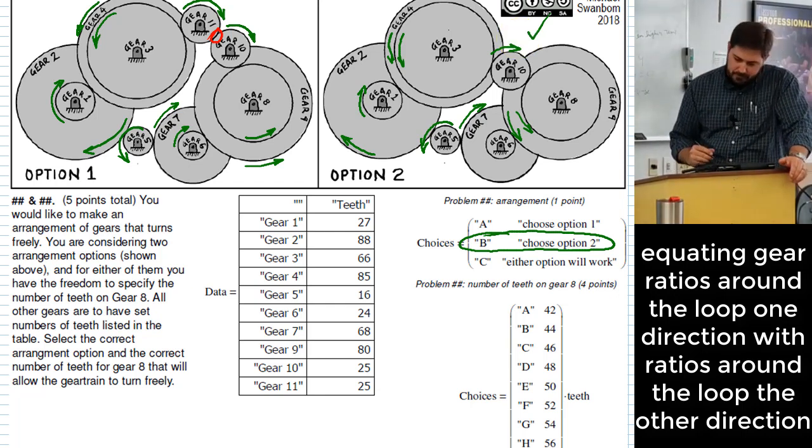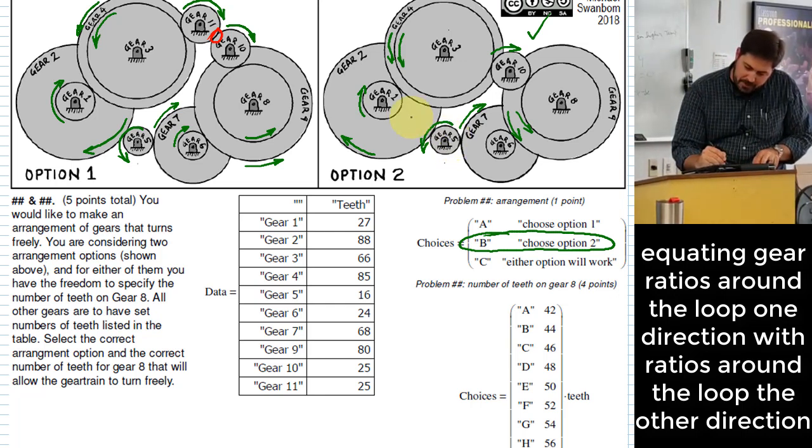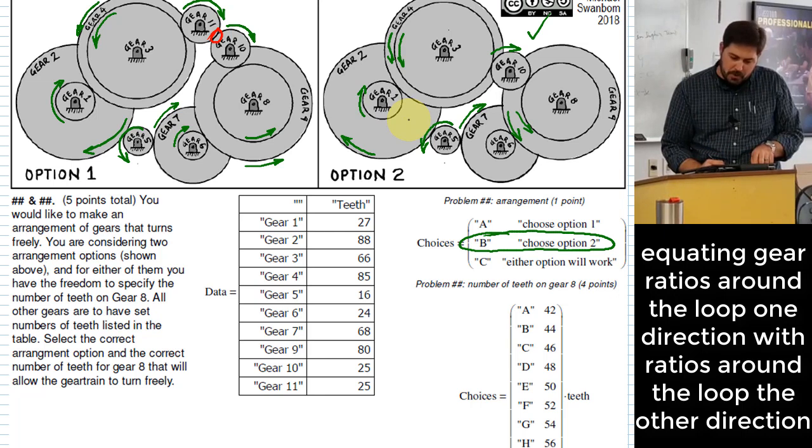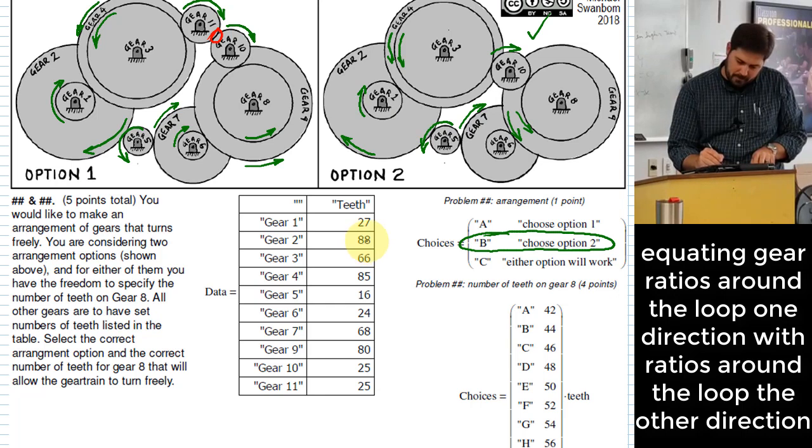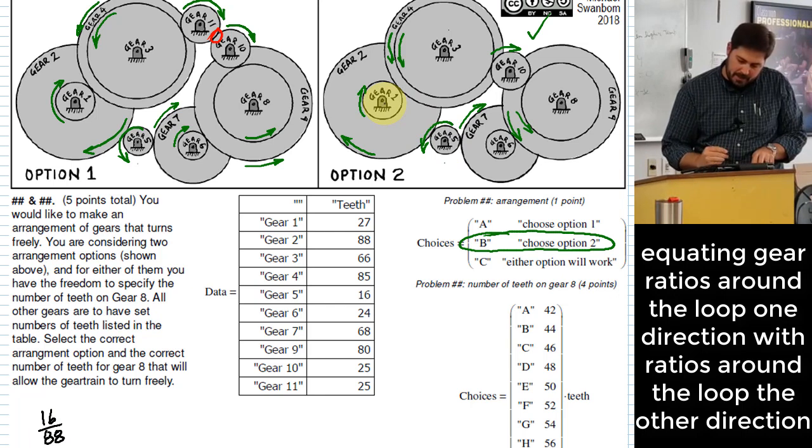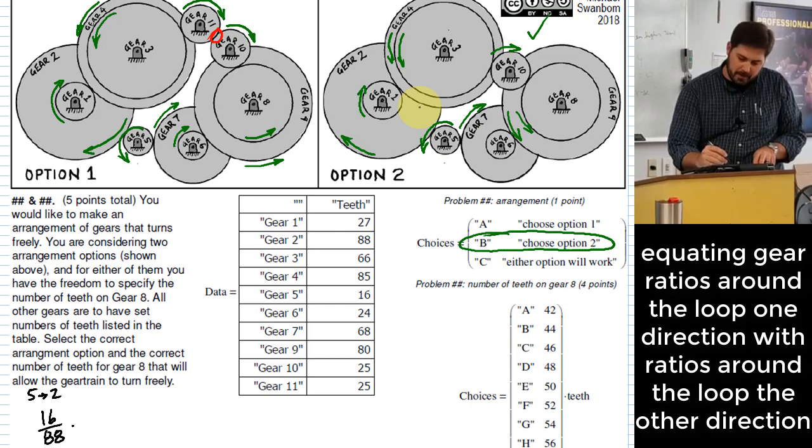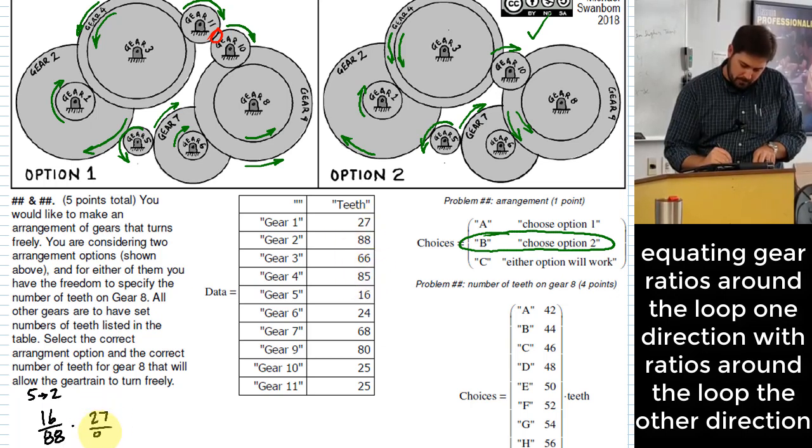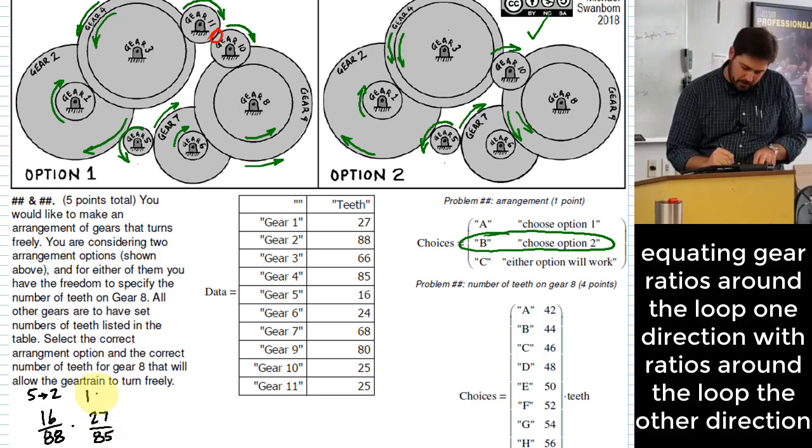So what we can do there is we can basically say, what's the ratio from gear five to gear two? Does gear two go slower or faster? Looks like it'll go slower, right? So you basically take gear five number of teeth, 16, and gear two number of teeth, 88, and that would be the first ratio that we would have between gear five and gear two. So maybe I'll say five to two. What's next after that? Gear one to four. Does that slow it down some more? So we probably want to do like a 27 over 85. And this goes from one to four.